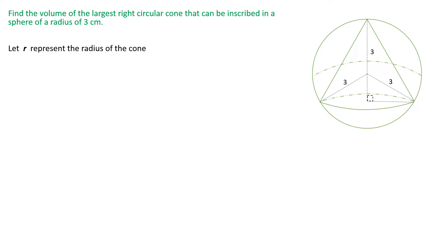We're going to let r represent the radius of the cone and h represent the height of the cone. We're going to have a right angle triangle inside the cone, and the height of that right angle triangle will be h minus 3, since the radius of the sphere is 3 cm and the height of the cone is h.